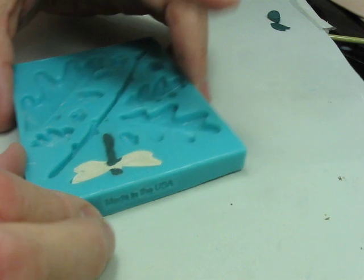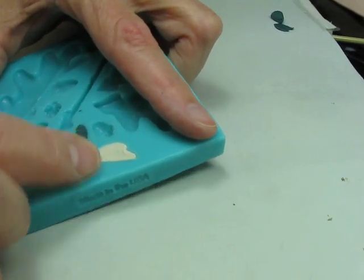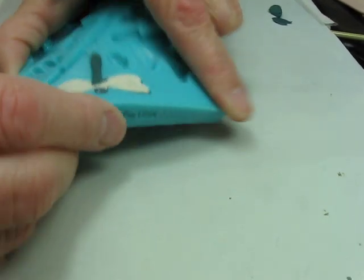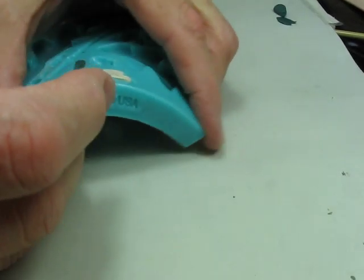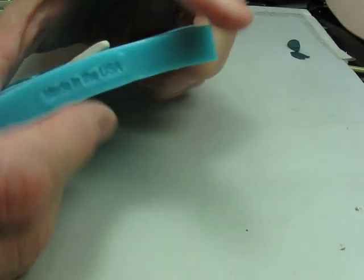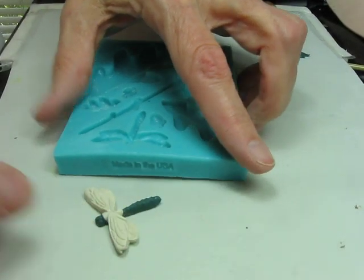Now that we can see all the points and a slight line of separation shows around the entire body of the dragonfly, we can begin to flex. Flex first one way and then the other way. Even though these are strong molds they are very flexible and it's easy to flex and remove a beautiful molded part.